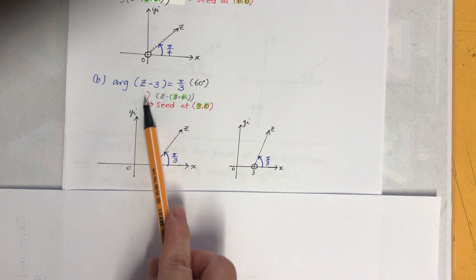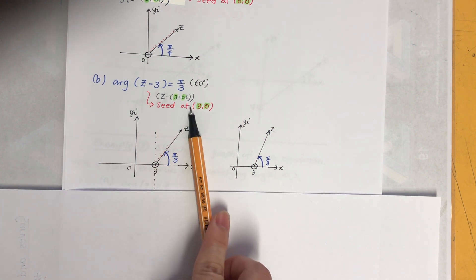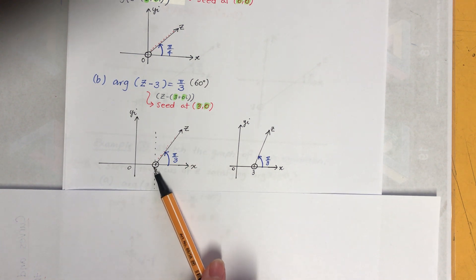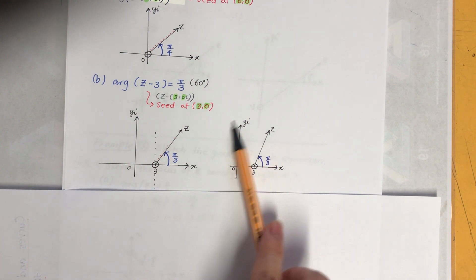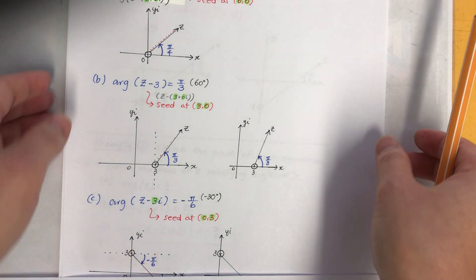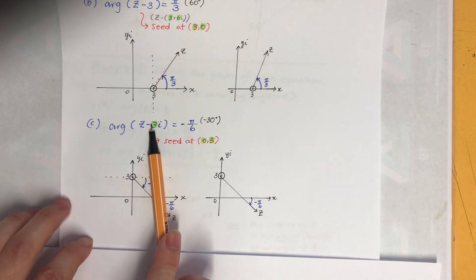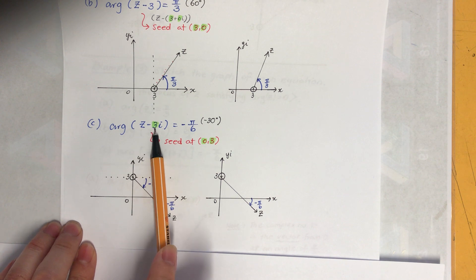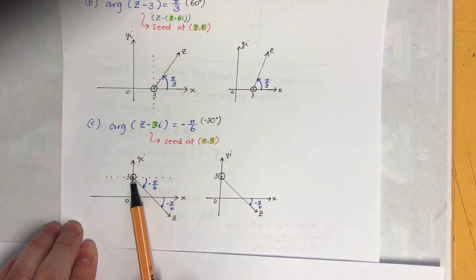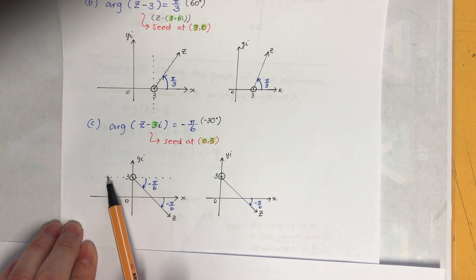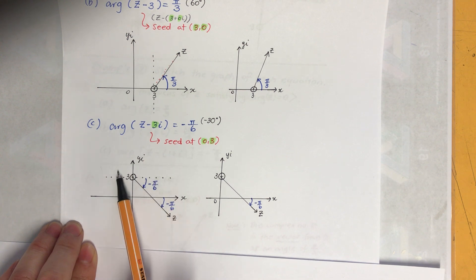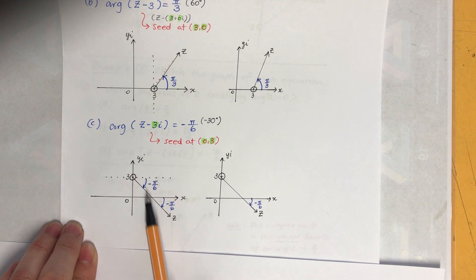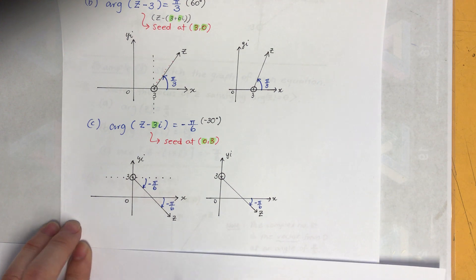The second example: the real part is 3 and imaginary part is 0, so the seed starting point is (3, 0). From there, still starting from the x-axis, go anti-clockwise π/3 which is 60 degrees. The third example: real part is 0, imaginary part is 3, so the seed is (0, 3). It's a negative angle, so clockwise — draw a pretend x-axis at the starting point and go down to minus π/6, which is negative 30 degrees.